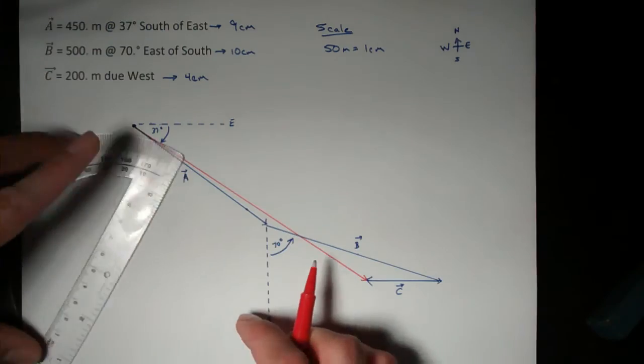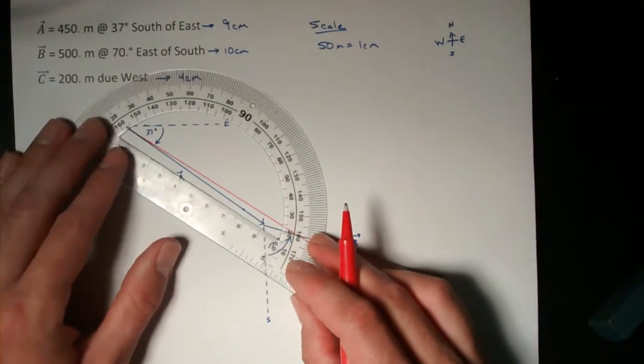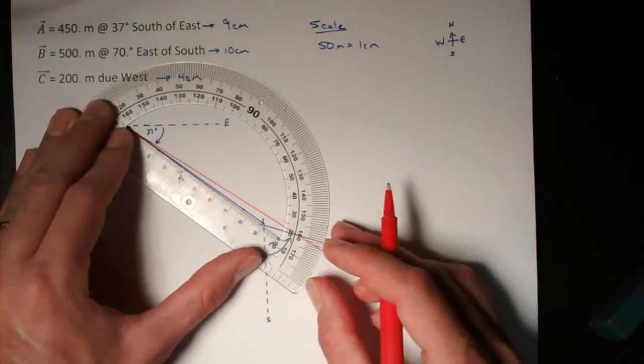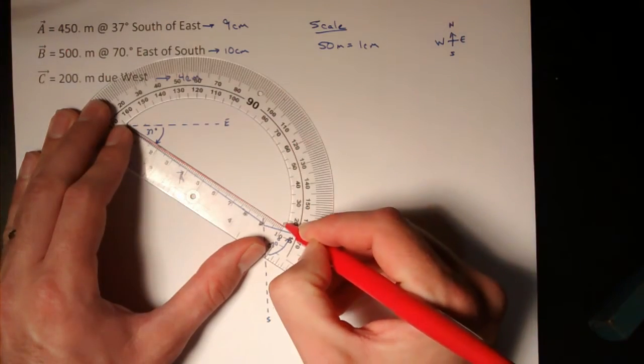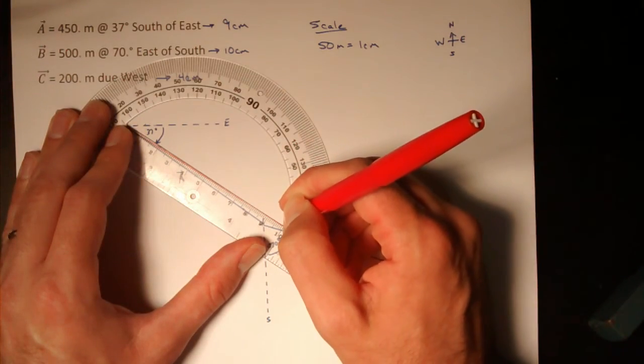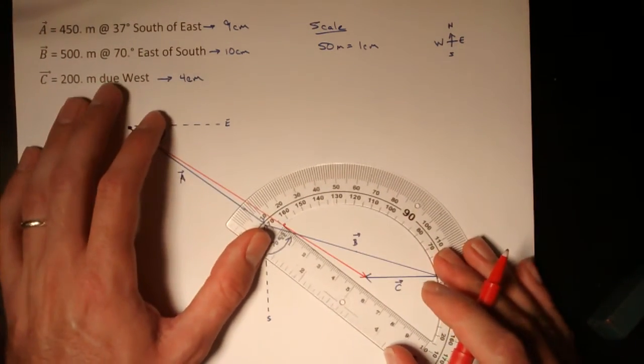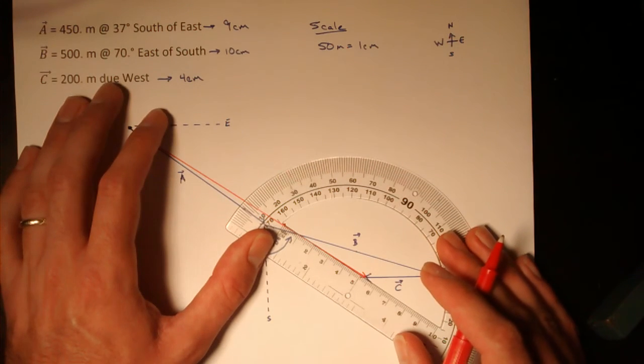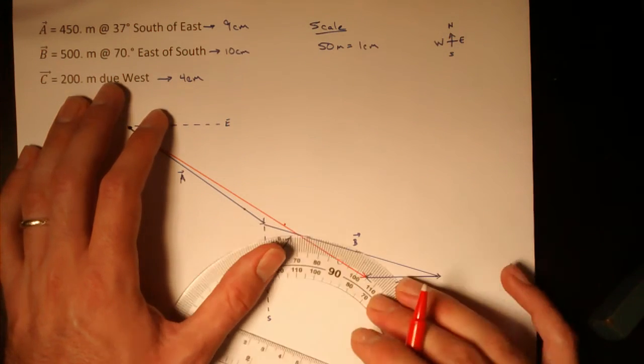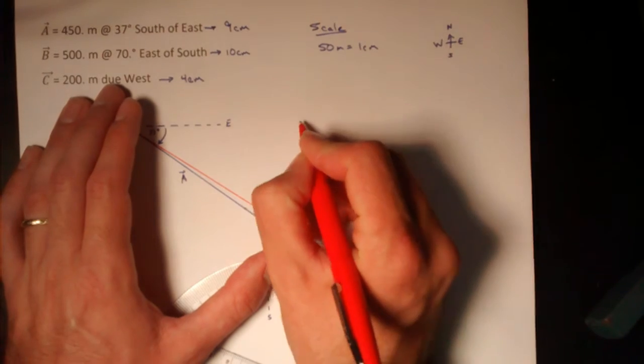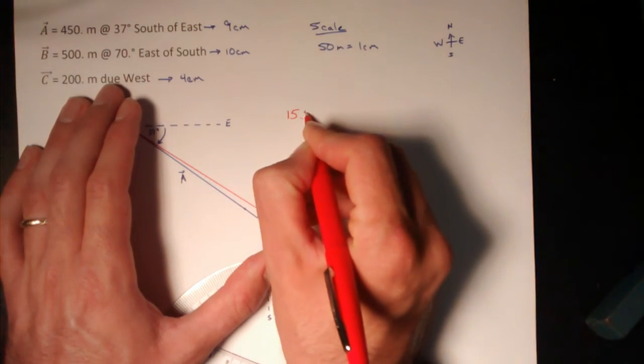To figure out the magnitude of the resultant, I'll have to measure it. From the starting point to here is 10 centimeters. And then from that point to the end is 5.4 centimeters, so the total length is 15.4 centimeters.